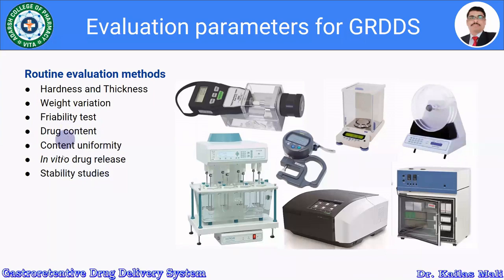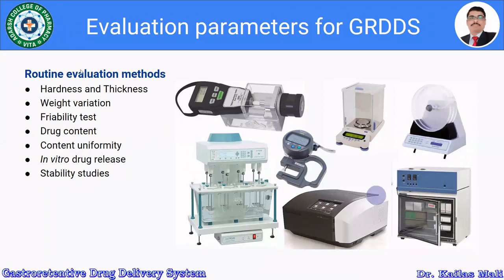For drug content and content uniformity, advanced analytical tools such as UV-visible spectrophotometer, high performance liquid chromatography, and gas chromatography are used to measure drug concentration. For in vitro drug release, dissolution test apparatus is used. Stability studies are performed according to ICH guidelines using a stability chamber. These are the routine evaluation methods: hardness, thickness, weight variation, friability, drug content, content uniformity, in vitro drug release, and stability studies.